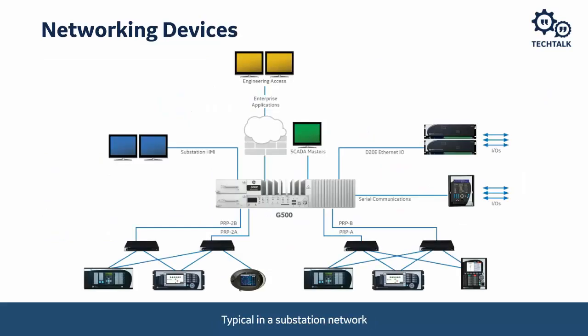A router is one networking device we will see in our Ethernet network. All of us are probably familiar with routers because they are provided by our Internet Service Provider, such as Verizon Fios, to give us access to the Internet or a wide area network. It's a networking device that forwards data packets between computer networks — from a local area network to another local area network, or from one LAN via the WAN to another LAN. Routers perform traffic directing functions, and a data packet is typically forwarded from one router to another through the network until it reaches its destination node.